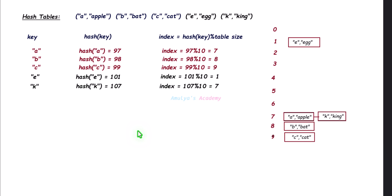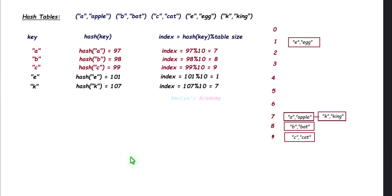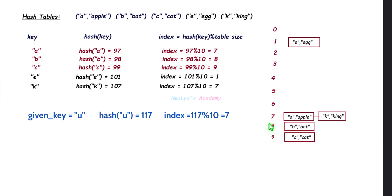Now, what if a key is not present in the hash table? For example, key X: it will check and the slot is empty, so it won't return a result. If we take another example that gives index 7, it will check whether the slot is empty — no — then search through the linked list. After searching the entire linked list, the key is not found, so it returns the message 'key is not found.'